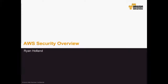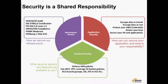Thanks, Maya, and thank you everyone for joining us this morning. We'll start with an overview of the security model for AWS. Our security model is one of shared responsibility, and we look at this in three different components: the infrastructure security, the security of the underlying services that you're running within AWS, and then the application security of the operating system and the applications that customers are running.